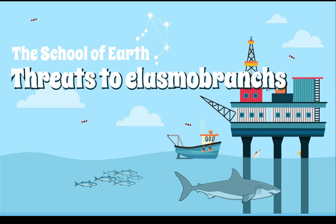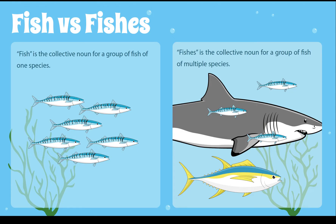Now let's look at the threats to elasmobranchs. A quick scientific note — fish versus fishes: we use 'fish' as a collective noun for a group of one species, such as a whole bunch of sardines. 'Fishes' is the collective noun for a group of multiple species — for example, a tuna, a shark, and a sardine together would be called fishes.